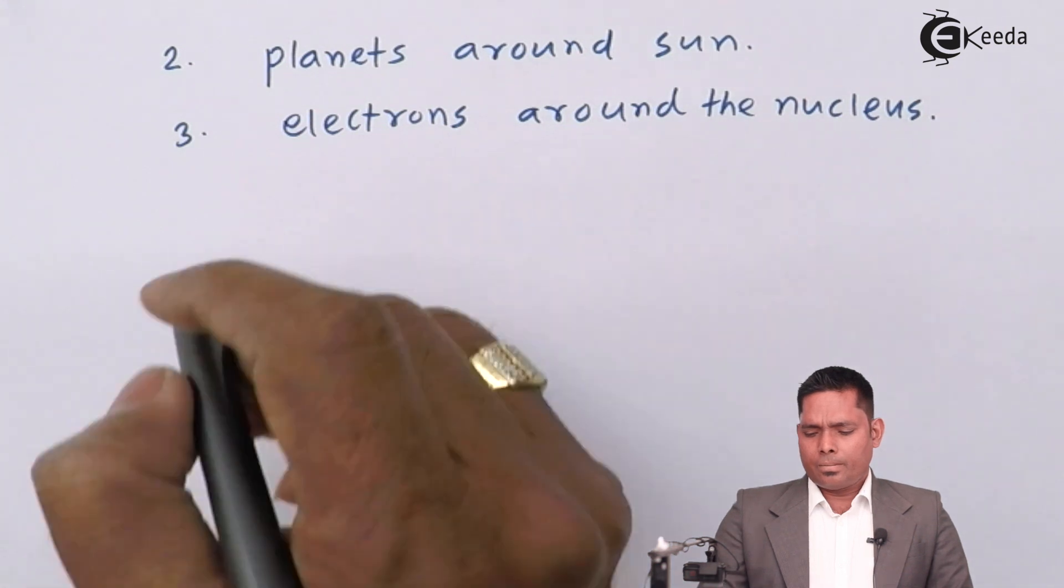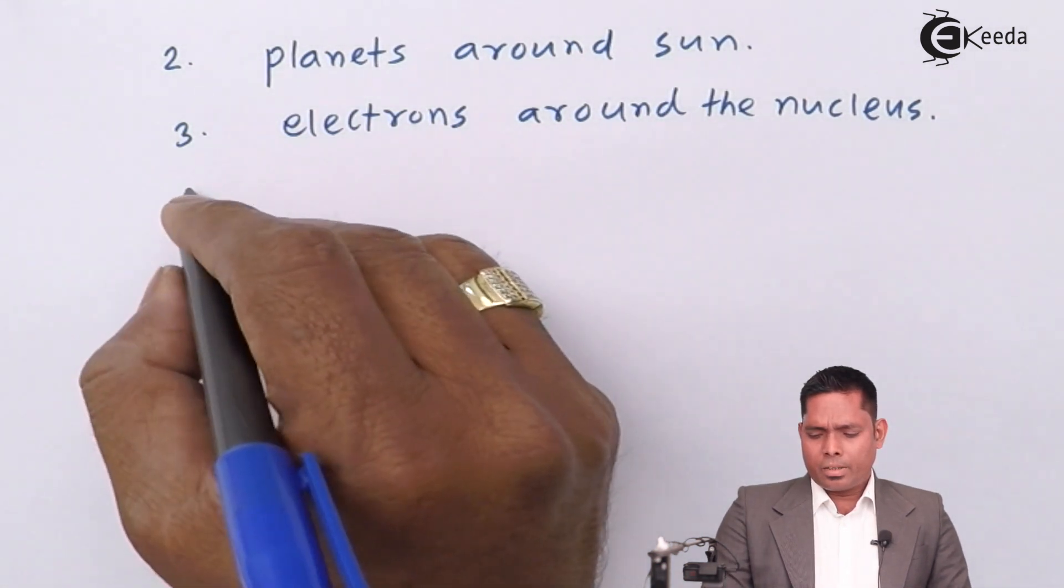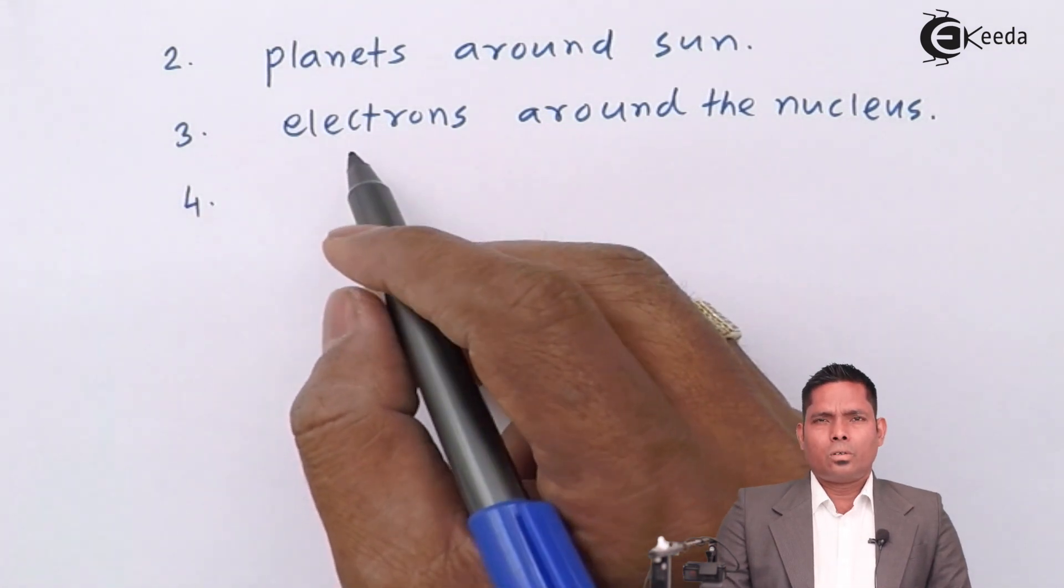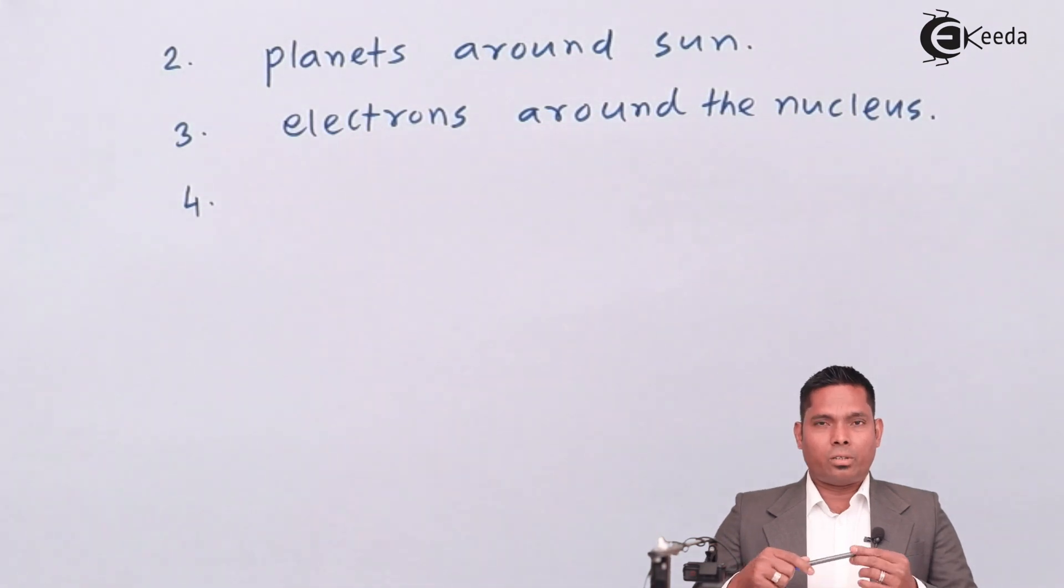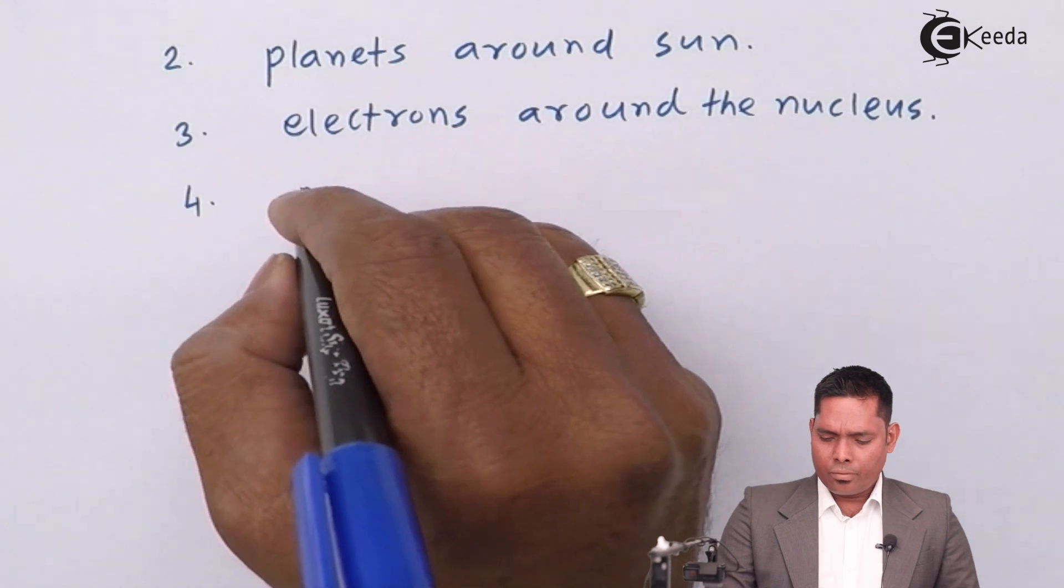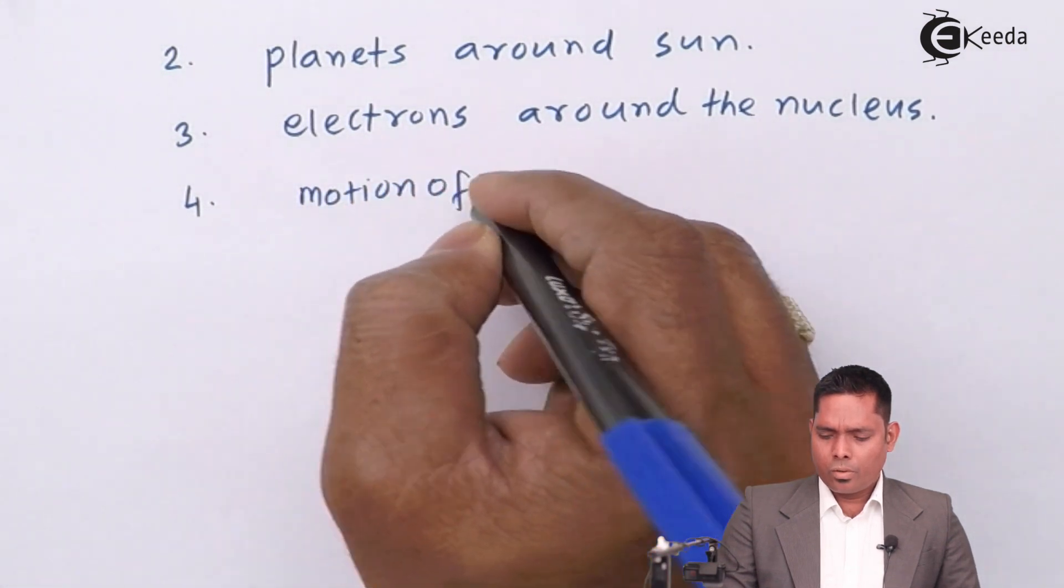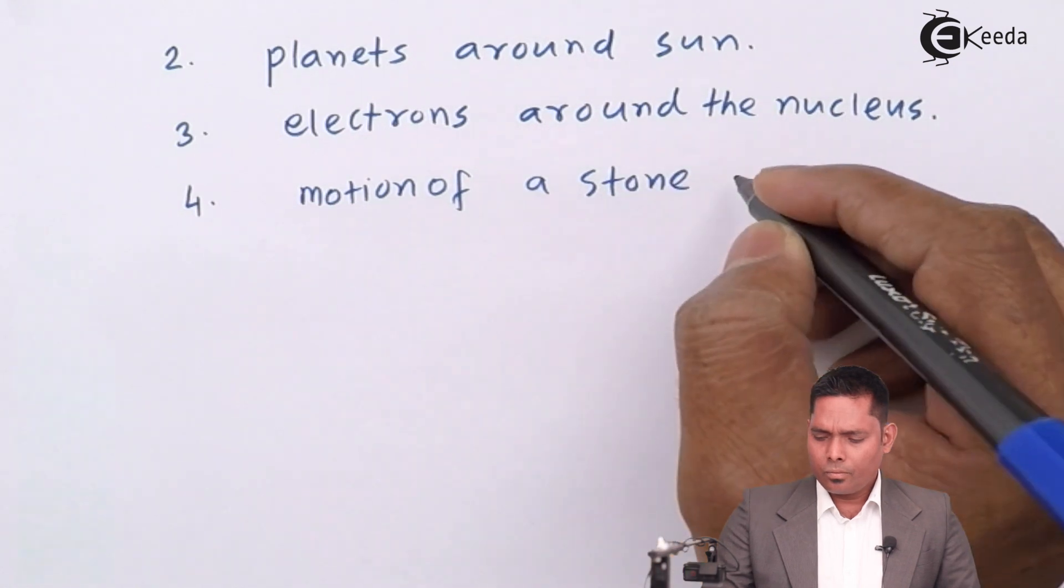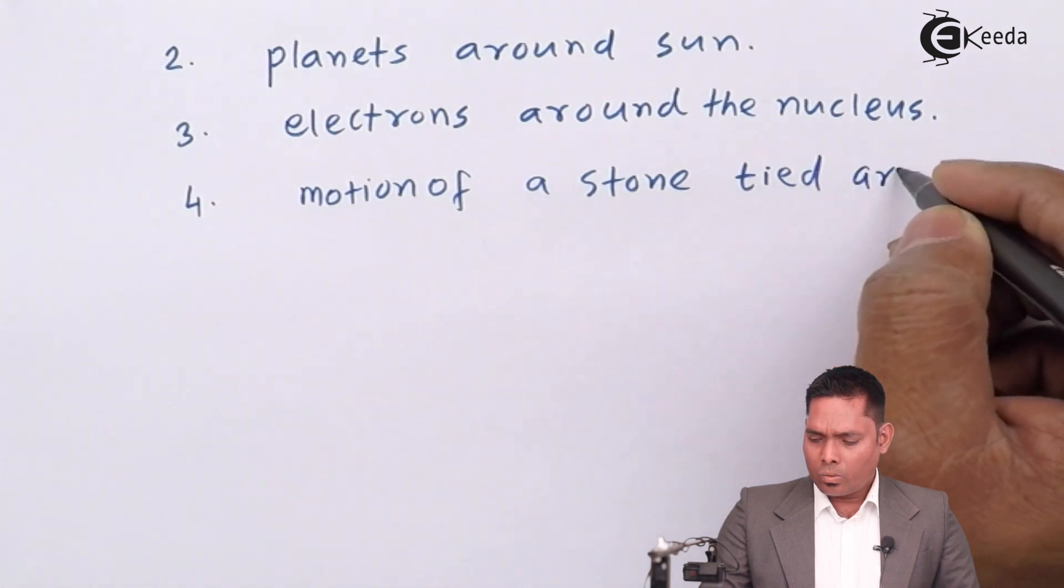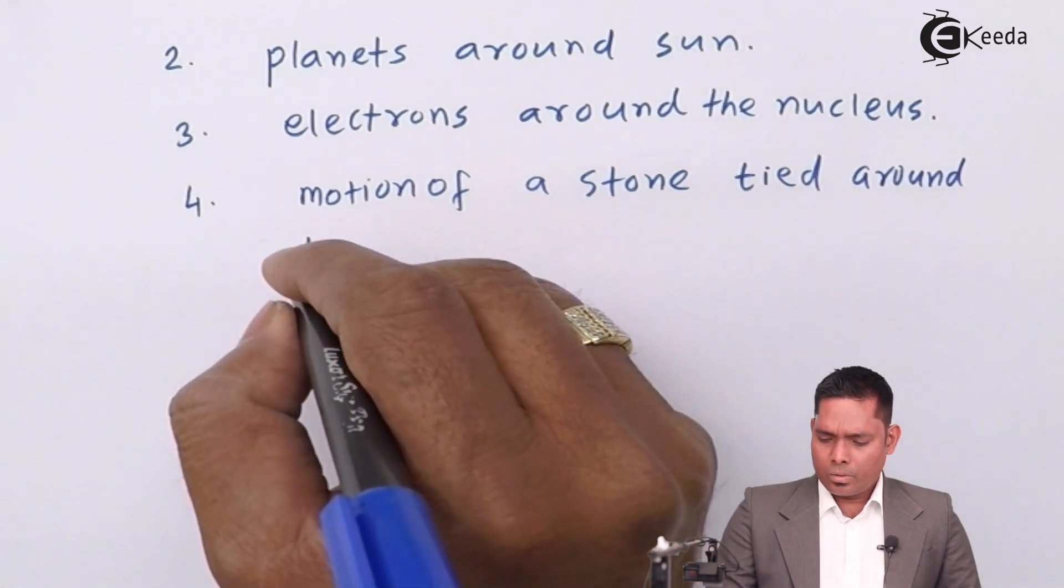We might have seen, we can have various examples. You can rotate a stone tying with a thread or a string attached to one end and other is held and it is rolled in a horizontal circle or a vertical circle. This is also circular motion.